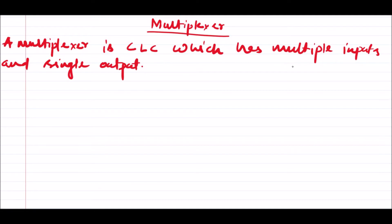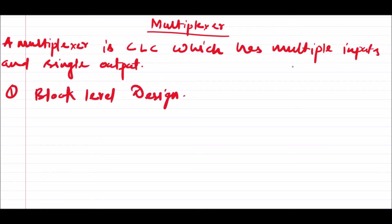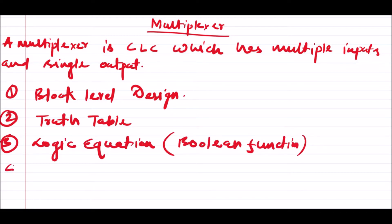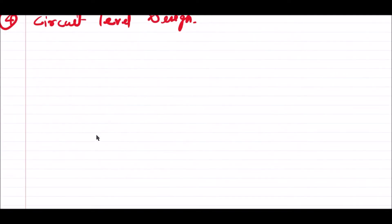As we discussed already in the previous session on adders, for the designing of any combination logic circuit we should always have the idea of four things: the first thing is block level design, the second one is truth table, the third one is logic equation or boolean equation, and the last one is circuit level design. So let us discuss one by one, starting with block level design.